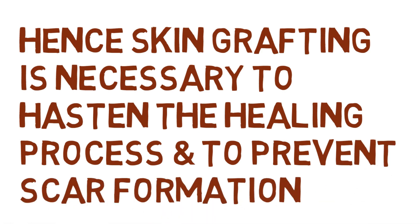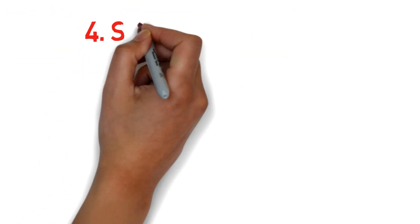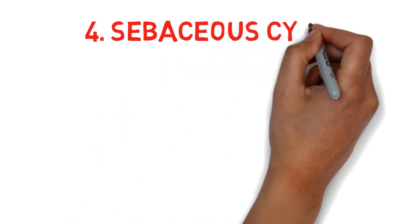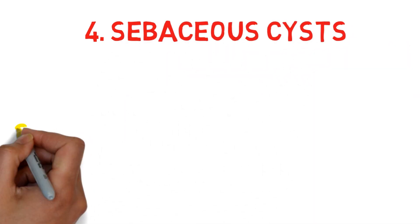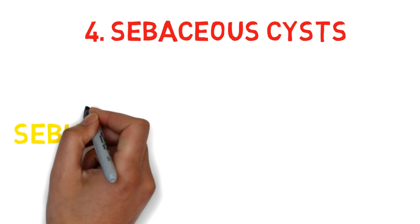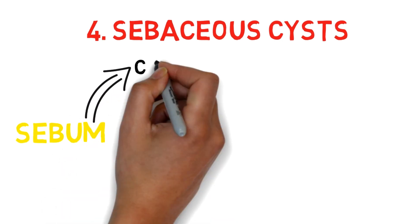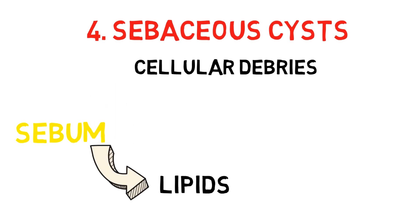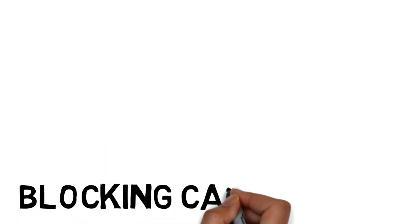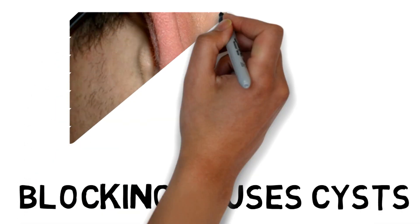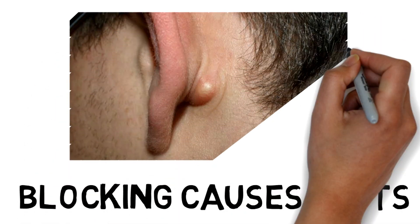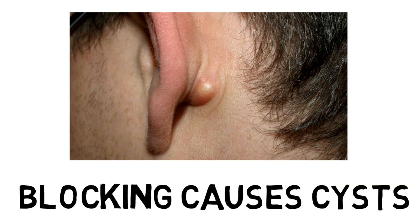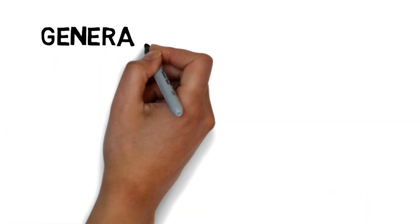Next topic is sebaceous cyst. The skin is kept soft and oily by sebum, which consists of cellular debris and lipids. This sebum is secreted by sebaceous glands and the mouth of these glands opens into hair follicles. If by chance the mouth of the sebaceous gland is blocked, the gland becomes distended by its own secretions and ultimately becomes a sebaceous cyst.